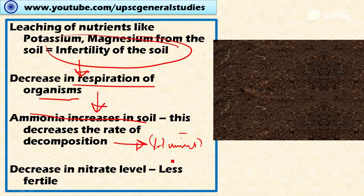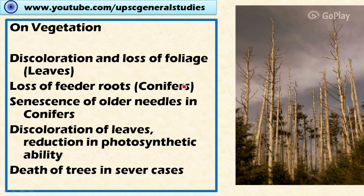Humus is the source for the formation of fertile soil, so a reduction in humus further reduces soil fertility. Acid rain also decreases the nitrate level in the soil. Totally, a chain reaction occurs where the soil loses its fertility and carrying capacity to support microorganisms as well as plant life — the soil becomes less fertile. This is the impact of acid rain on the soil.